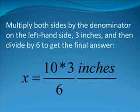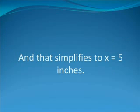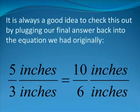Multiply both sides of the denominator, that is the bottom part of the fraction or ratio on the left-hand side, 3 inches, and then divide by 6 to get the final answer. X is equal to 10 times 3 inches divided by 6, and that simplifies to X equals 5 inches.